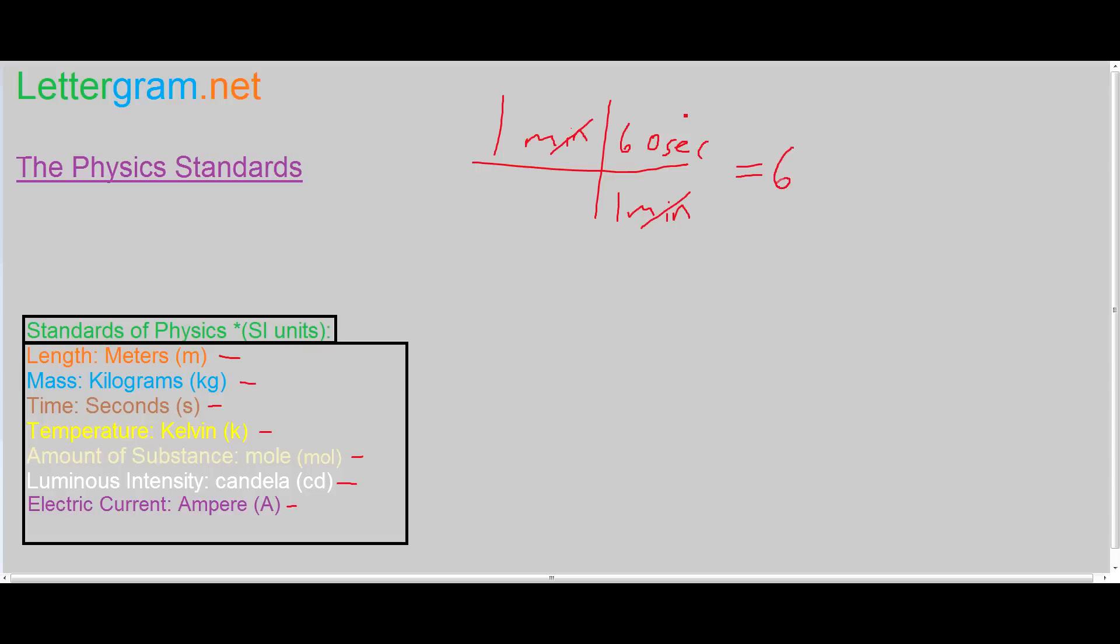We know one minute is equal to 60 seconds, so cross those off. Let's say we have 1.25 minutes. We still have to divide by one minute...